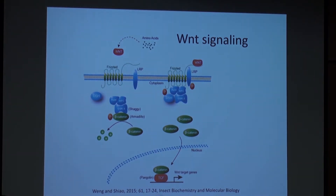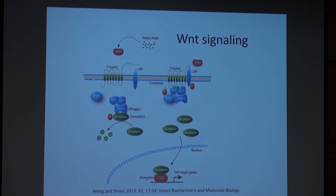We think there should be other signaling pathways involved. After screening, we found a potential candidate: the Wnt signaling pathway, which has been well-studied in Drosophila and is involved in the regulation of development. The Wnt pathway has two forms. The activation form consists of a receptor protein called Frizzled. Upon activation, a complex forms that results in the degradation of beta-catenin. The activated Wnt protein binds to TOR kinase, leading to phosphorylation of beta-catenin and production of Wnt target genes.